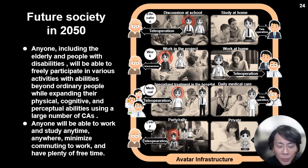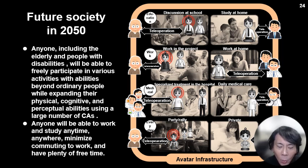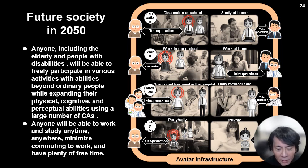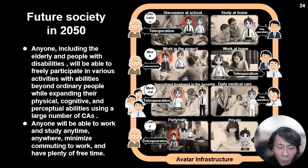We want to realize a society where anyone, including the elderly and people with disabilities, will be able to freely participate in various activities with abilities beyond ordinary people, expanding their physical, cognitive, and perceptual abilities using a large number of avatars. Anyone will be able to work and study anytime, anywhere, minimize commuting, and have plenty of free time. I hope to realize this kind of ideal society.